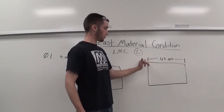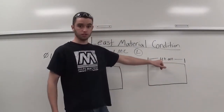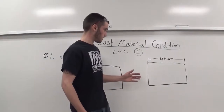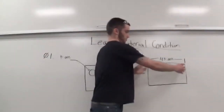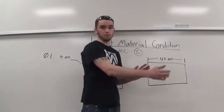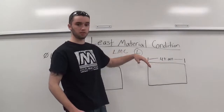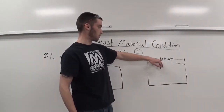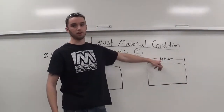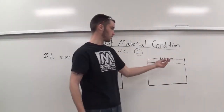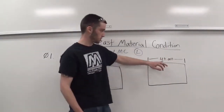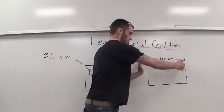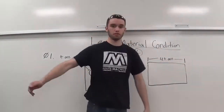Here I have this rectangle with a length from here to here of four inches and a tolerance of plus or minus three thou. We want this length to be as small as it can be, taking away the most material but staying within our tolerance, so this dimension would be three inches and nine hundred ninety seven thousandths — we just take four inches minus three thou, giving us the smallest number we can have.